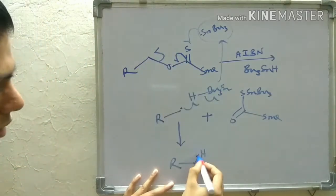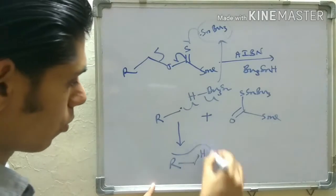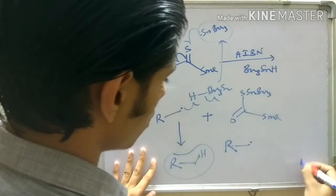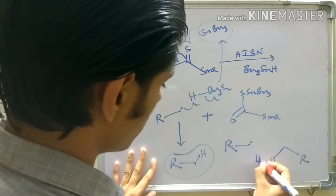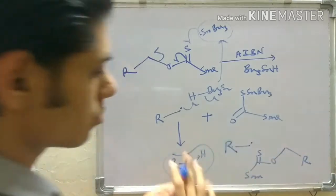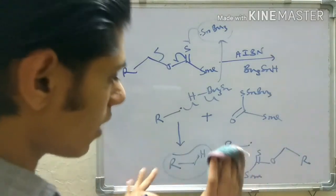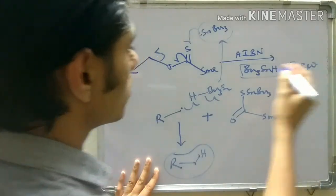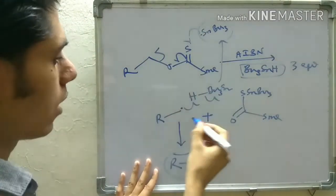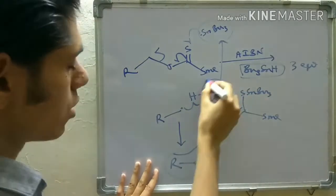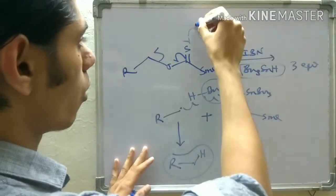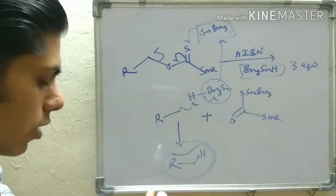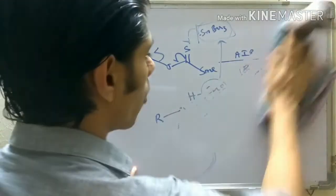The alkyl radical R• then abstracts a hydride from another molecule of Bu₃SnH, giving the reduced deoxygenated product and regenerating a new Bu₃Sn• radical. We used Bu₃SnH in about three equivalents excess, so there are always more Bu₃SnH molecules available than substrate, and all R• radicals abstract from Bu₃SnH. This is a radical chain reaction — the Bu₃Sn• radical continuously attacks new xanthate ester molecules, giving the reduced product.